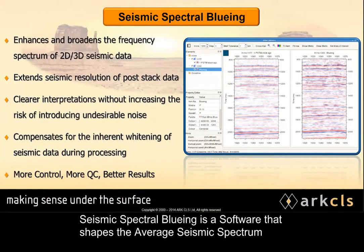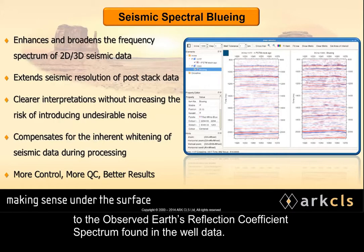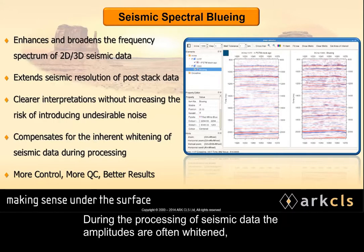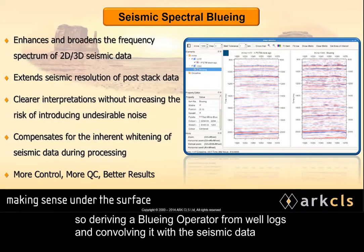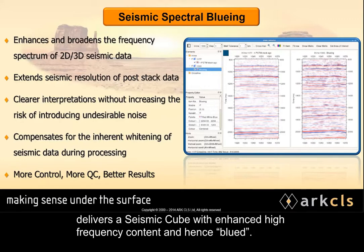Seismic spectral bluing is software that shapes the average seismic spectrum to the observed Earth's reflection coefficient spectrum found in the well data. During the processing of seismic data, the amplitudes are often whitened, so deriving a bluing operator from well logs and convolving it with the seismic data delivers a seismic cube with enhanced high frequency content, and hence, blued.